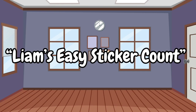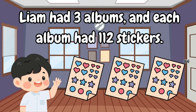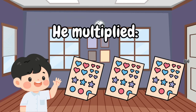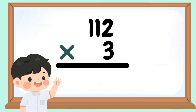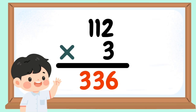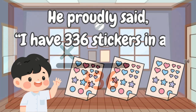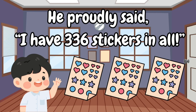Liam's Easy Sticker Count. Liam had 3 albums, and each album had 112 stickers. He multiplied: 112 times 3. 3 times 2 equals 6. 3 times 1 equals 3. 3 times 1 equals 3. 336 is the product. He proudly said, 'I have 336 stickers in all.'